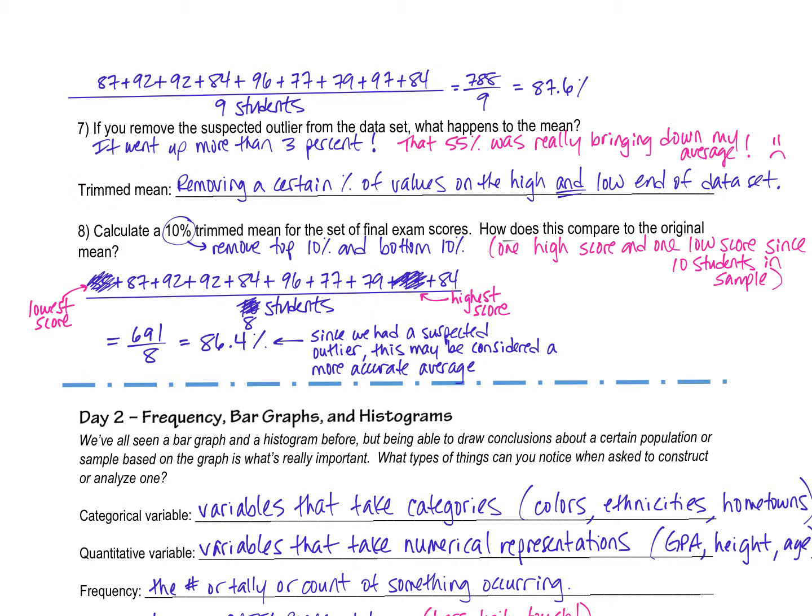Anyways, we have this also, this other vocab word called a trimmed mean. This means that you remove a certain percent of values on the high end and the low end of a data set. So it's a little bit more of a fair way of calculating the average after removing an outlier. So in this case, if we are going to calculate a 10% trimmed mean, here's the other probably new thing that you have maybe never referred to or used before.